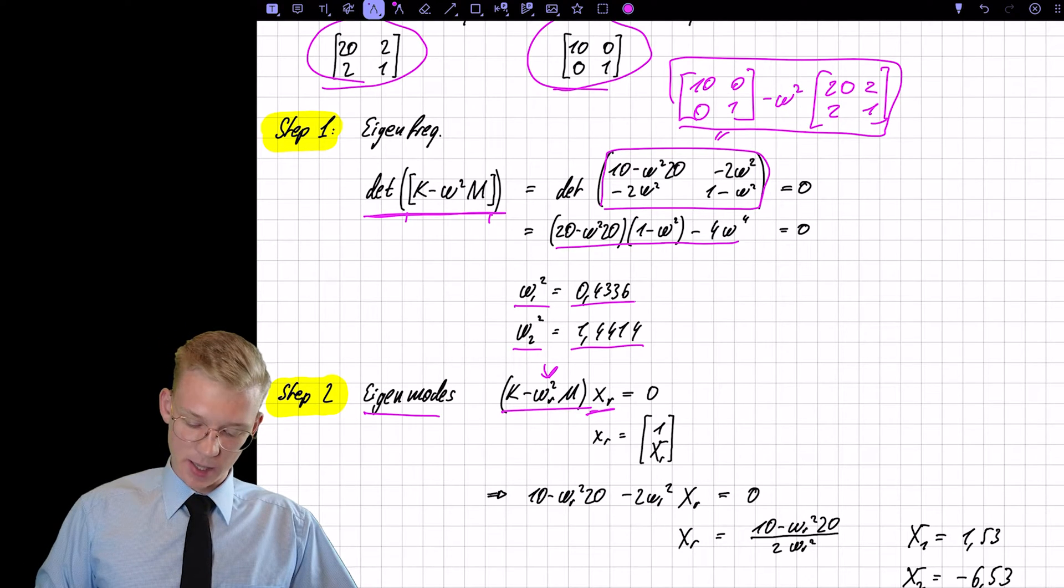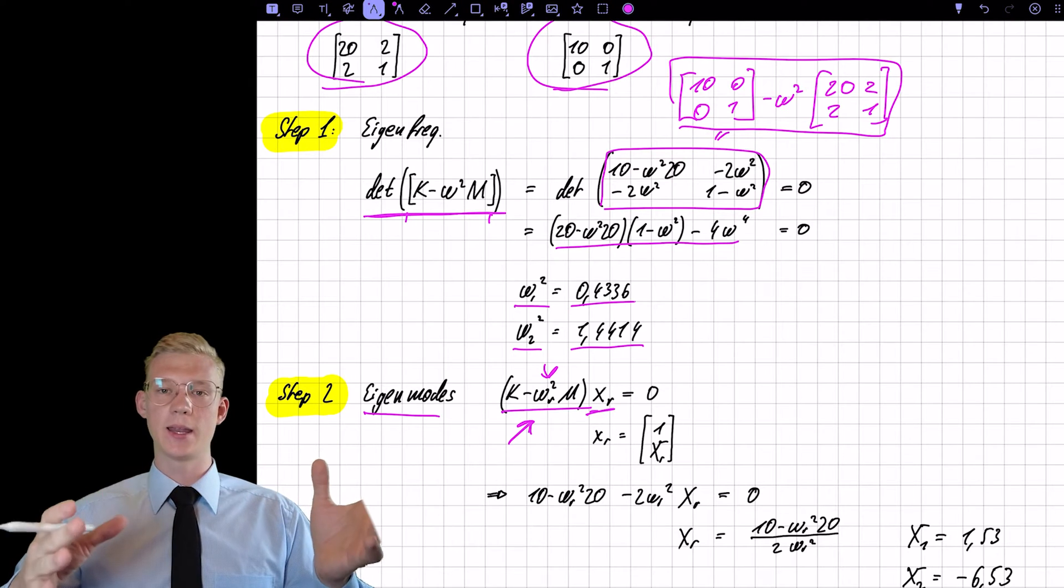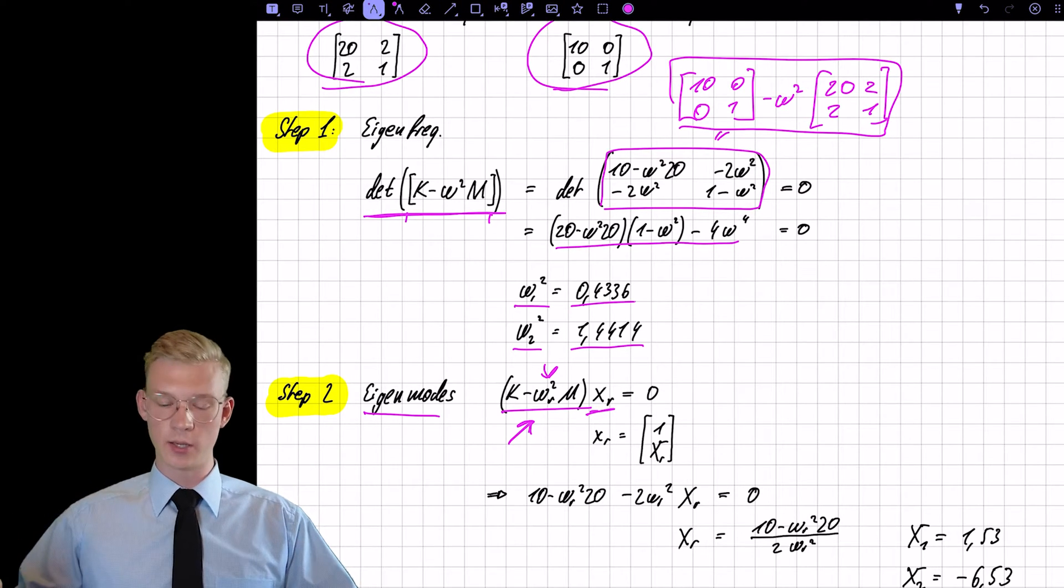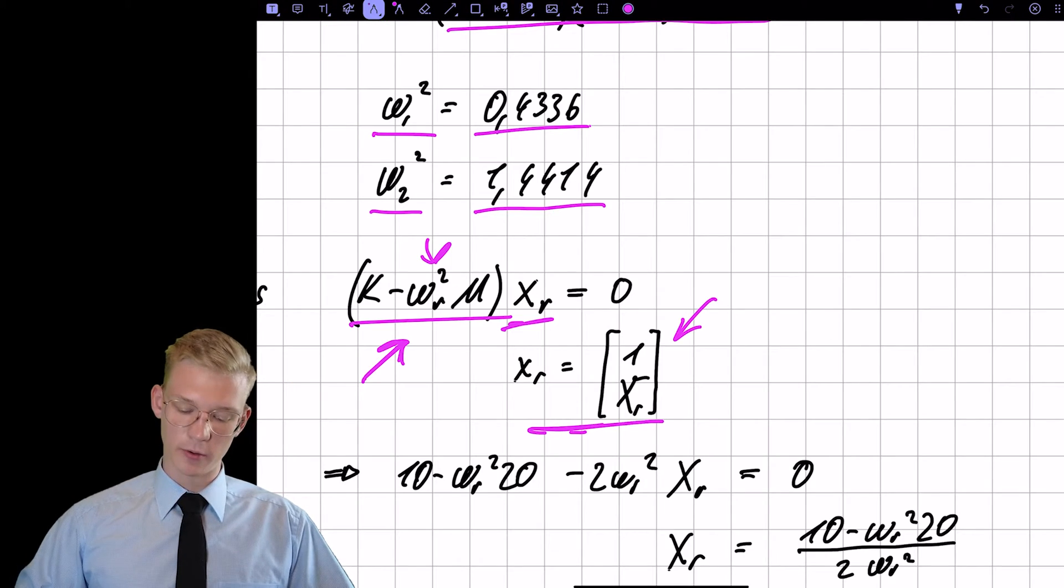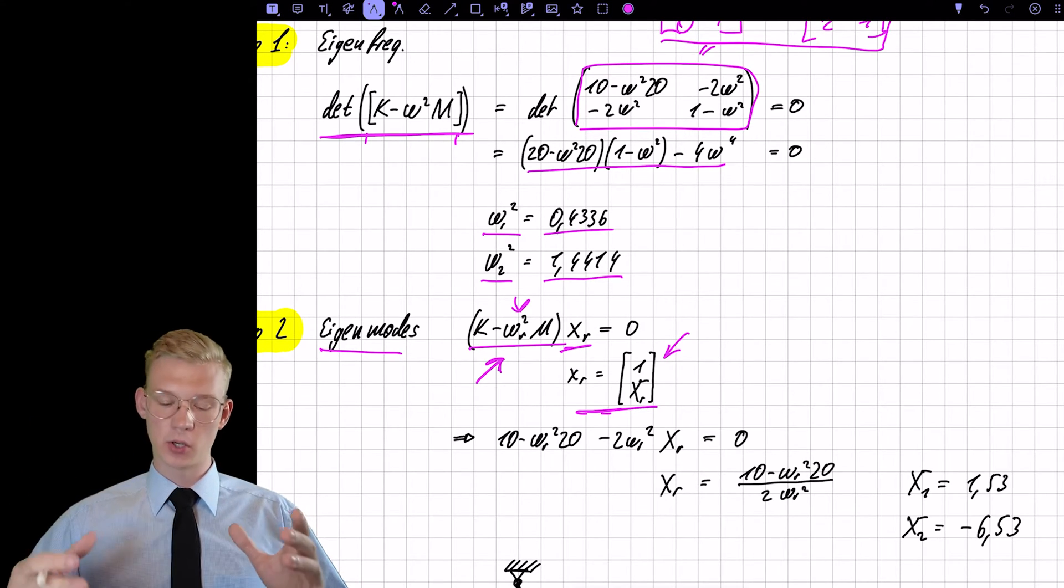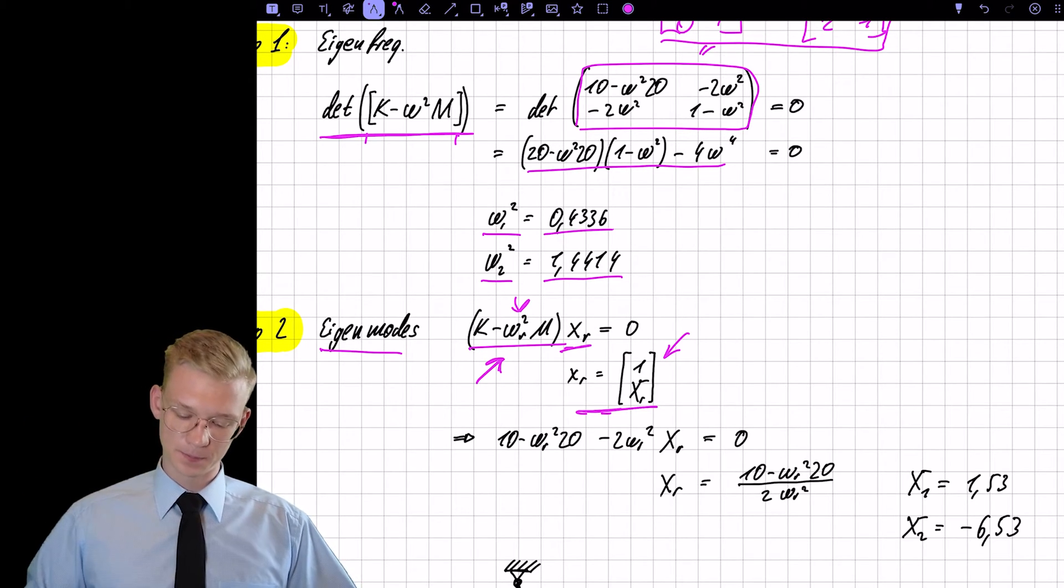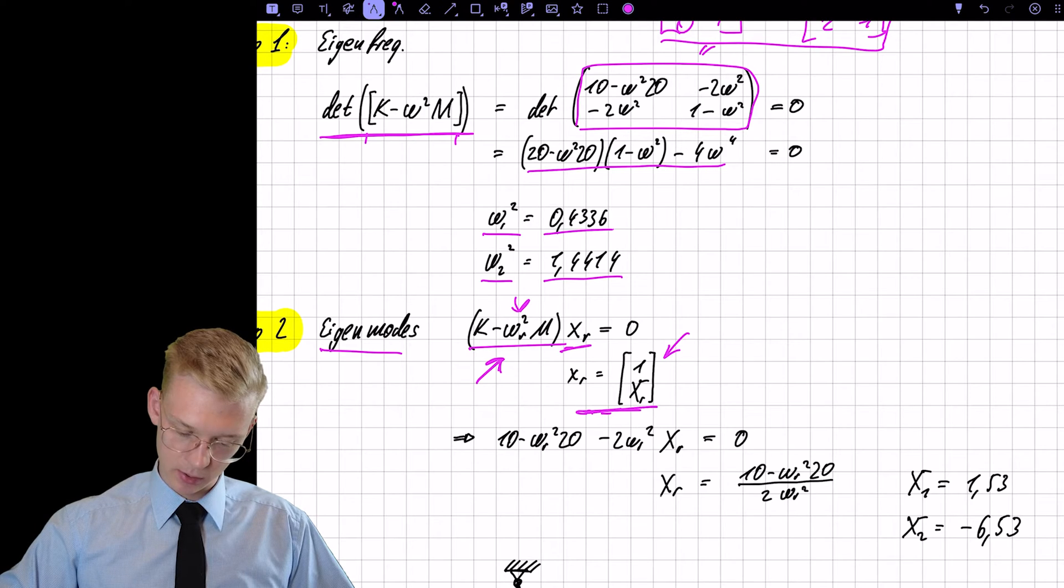But the thing is that this matrix is linearly dependent, the rows of this matrix are linearly dependent because it has a determinant that is equal to zero. So we can't fully define our x. This is why we set our first value basically to one. We have to do some input because it's not completely defined. So if we have this x and we have this matrix, let's write it down.